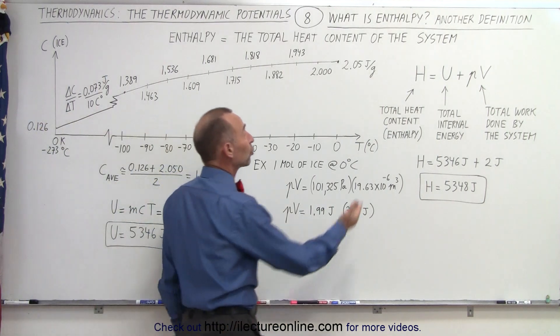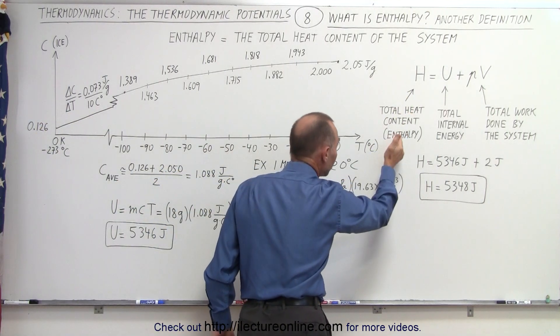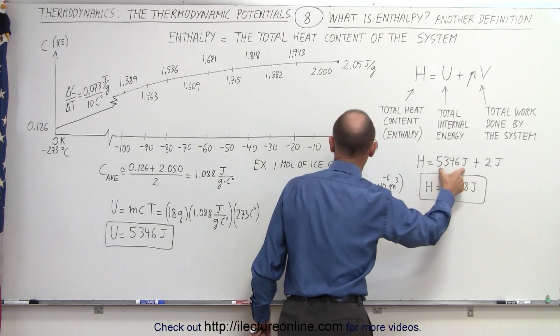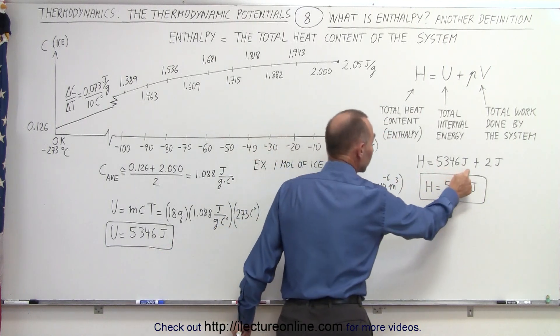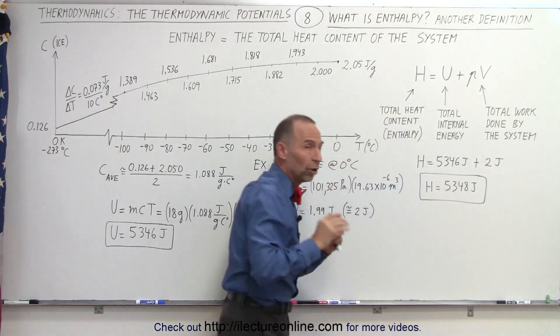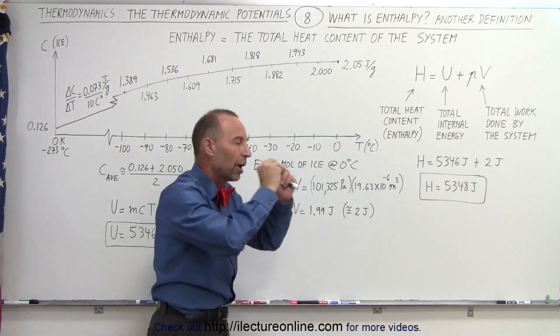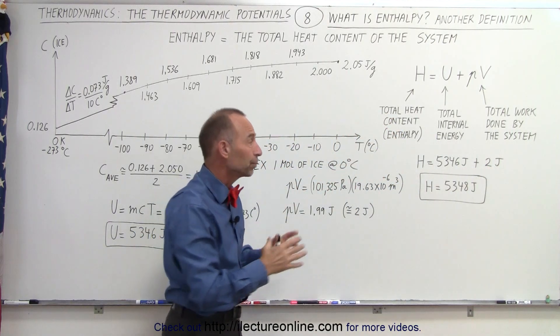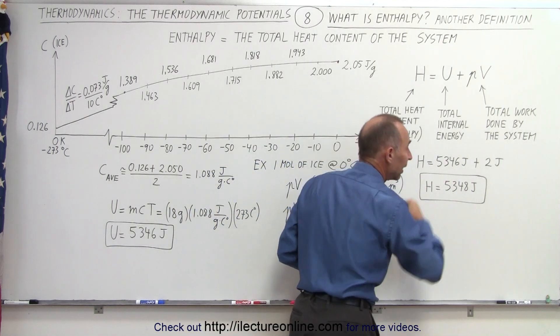So now we can say that the total heat content, which is the enthalpy of that cube of ice, is equal to the total internal energy plus the energy required to push the atmosphere out of the way to put the object into the atmosphere. Together it gives us the total heat content.